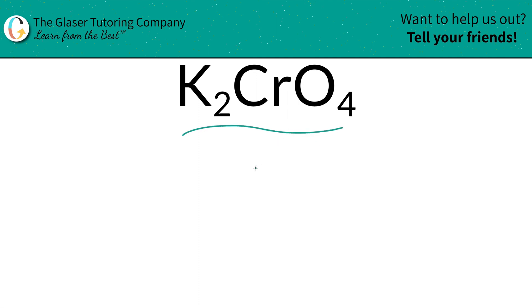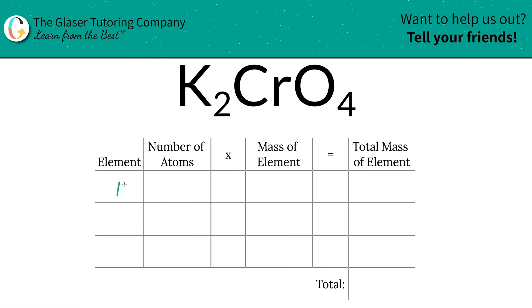In order to do this I've created a nice little table. So the first thing I'm going to do is write down the elements I see. So we got potassium, we got chromium, and we got oxygen.